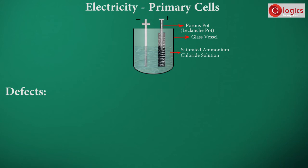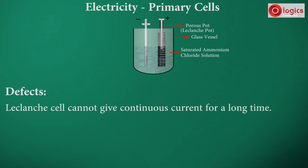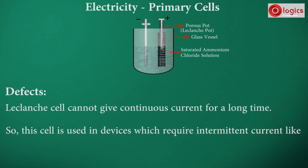Defects: Leclanché cell cannot give continuous current for a long time. So, this cell is used in devices which require intermittent current like electric bell, telegraph, telephone, etc.